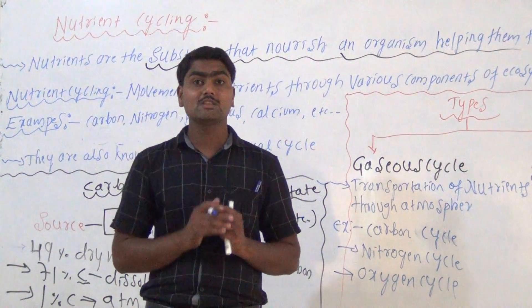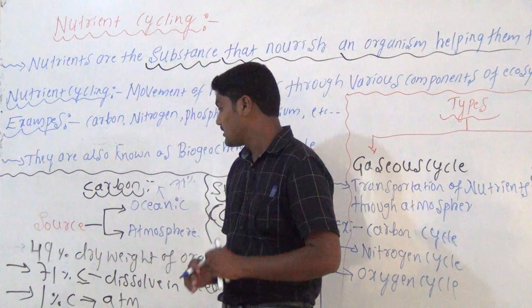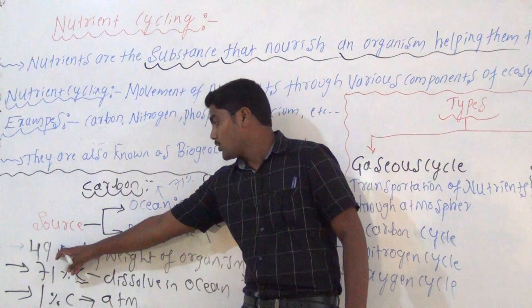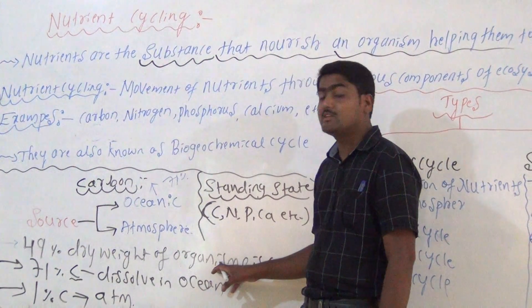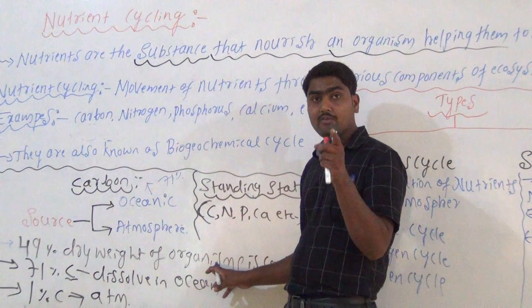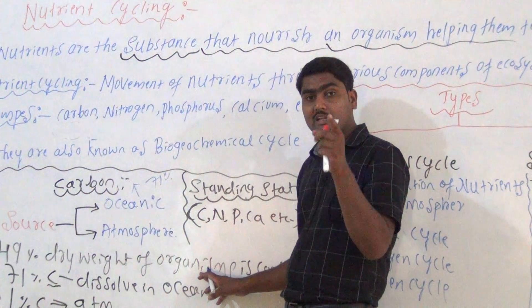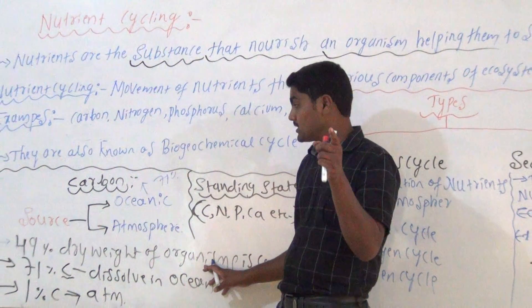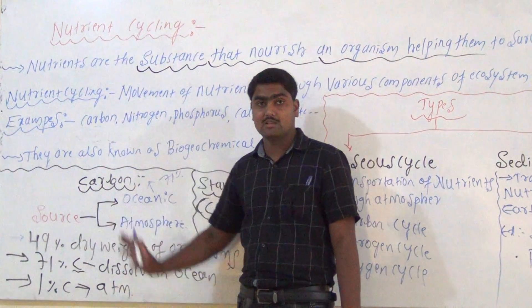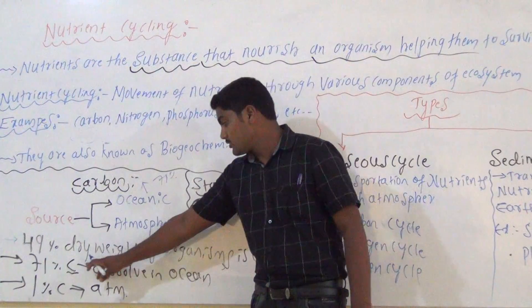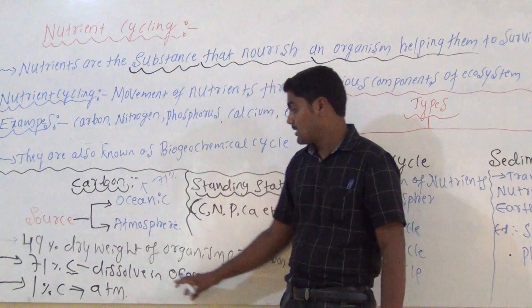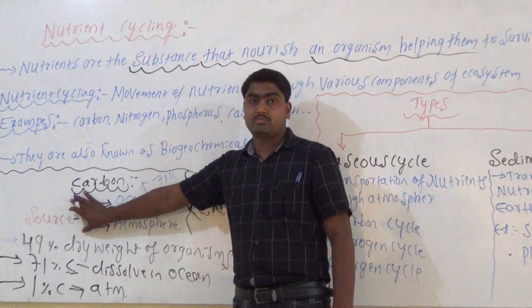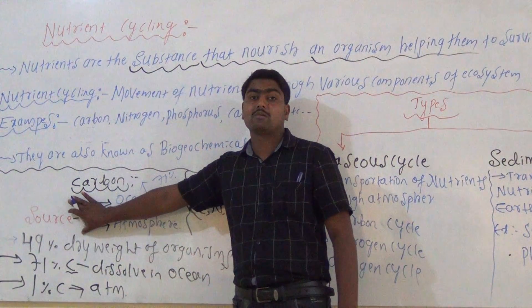About 49% of the dry weight of organisms is carbon — it is the organic matter. Around 79% is dissolved in the ocean, and about 1% is in the atmosphere. These are the sources and reservoirs of carbon.